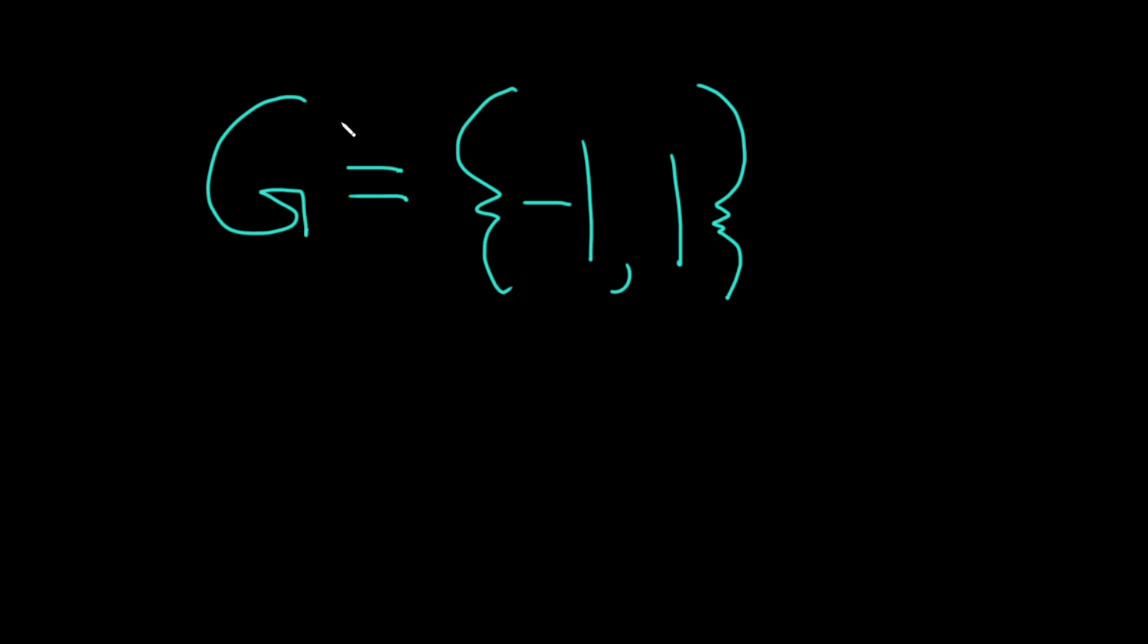Hi, in this video we're carefully going to go through the justification that this set here G, which is the set containing the two numbers negative one and one, is a group under the operation of multiplication. So we're going to show that this set G together with regular multiplication is in fact a group.